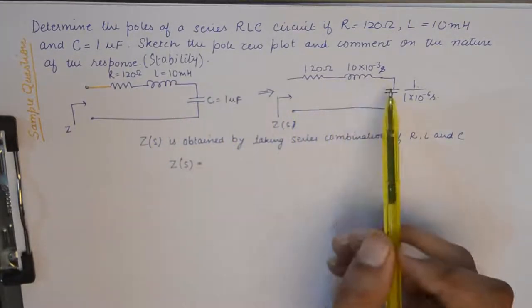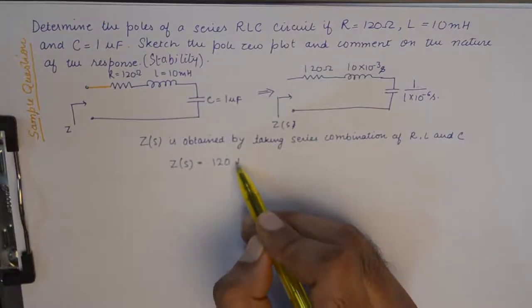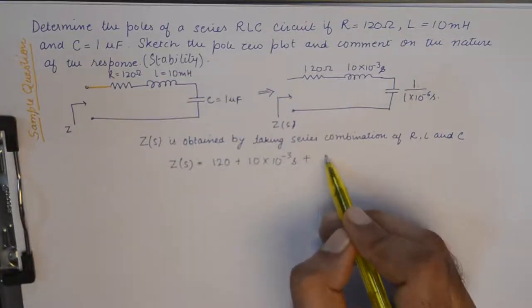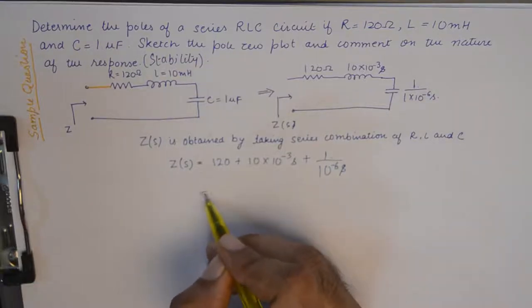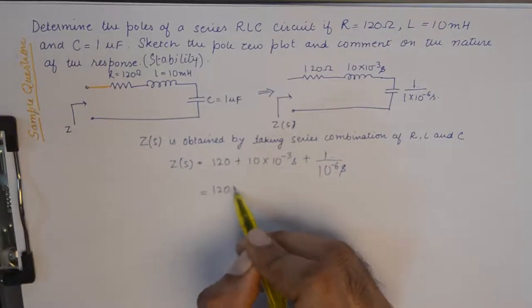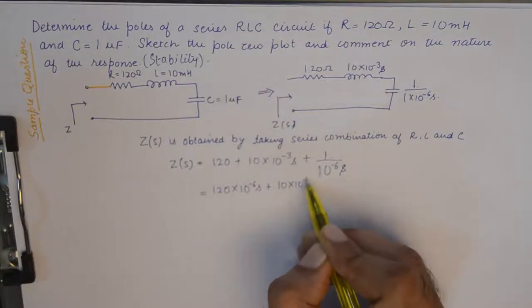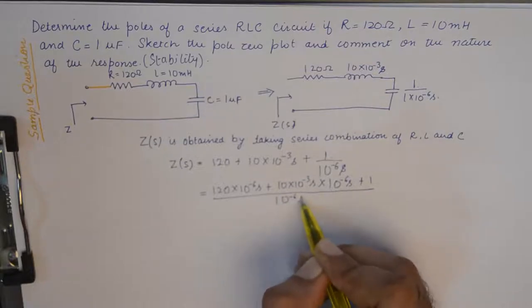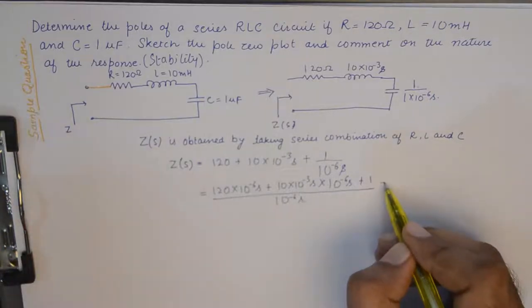So from this network we go to the S domain, and you know the rules for that. And Z(s) now becomes sum of all three. So solving we get the final expression.